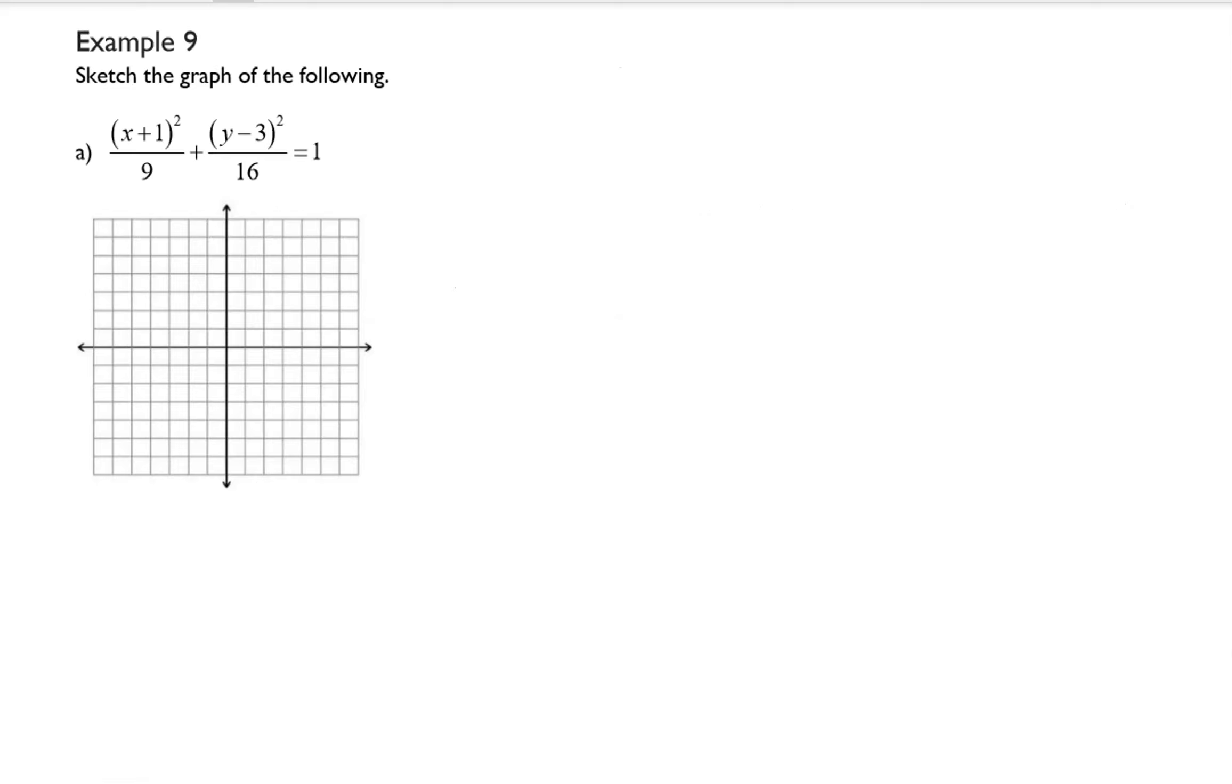Example 9 says sketch the graph of the following equations. So part a we have (x+1)²/9 + (y-3)²/16 = 1. Now in order to graph these we have to become very familiar with the different types of equations because we have to identify which type of conic section this is.